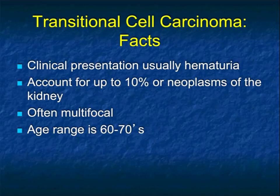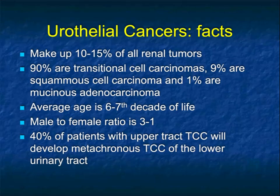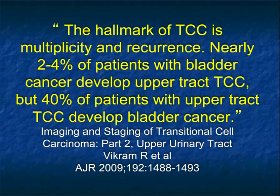The key thing about excretory phase imaging is really the detection of transitional cell carcinomas. These lesions account for about 10% of renal tumors. They're often multifocal, occur in older age patients, and are very easy to miss. They're more common in men than women. Metachronous TCCs become very important — if you see a lesion in the kidney, look carefully at the bladder, and if you see a bladder TCC, look at the upper tracts. The hallmark of TCC is multiplicity and recurrence.